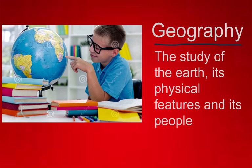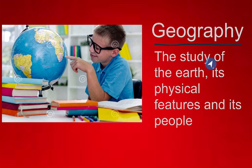The first word that we will be studying is geography. Geography is the study of the earth, its physical features, and its people. Here we see a picture of this little dude studying the earth. In your vocabulary diagram, instead of writing the entire definition, break it down into two, maybe three words. My recommendation is you write down 'study of the earth' — that pretty much sums up what geography means.